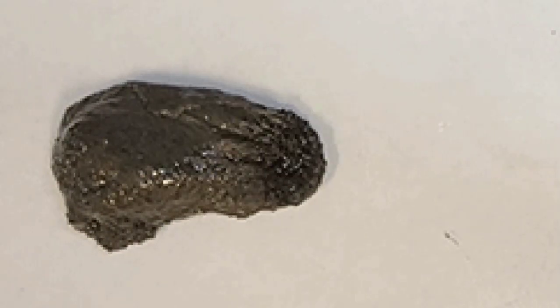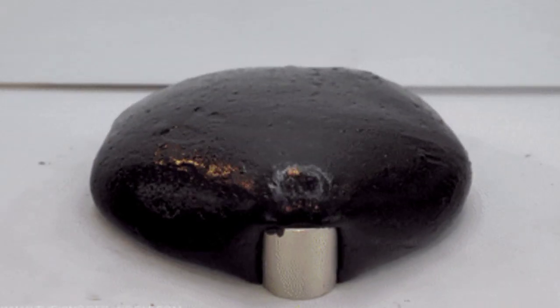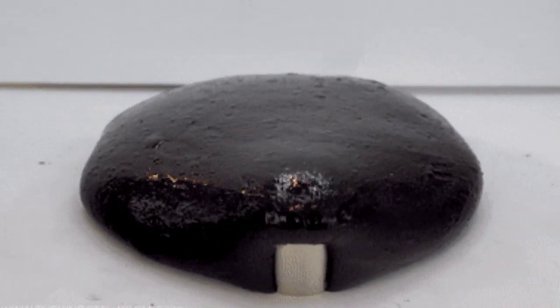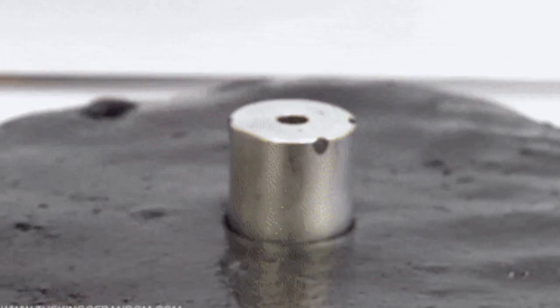When an alternating magnetic field is applied to the MPTM, the nanoparticles heat up and melt the gallium. This allows the robot to change its shape.